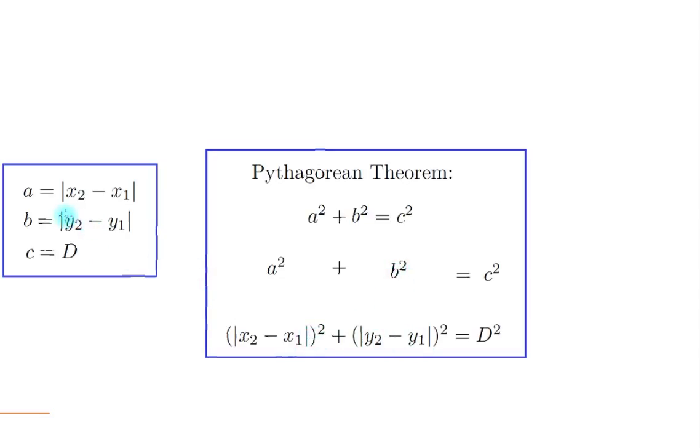b is equal to the absolute value of y₂ - y₁, which is this squared, equals c², but c is equal to D, so it's going to be D². Now notice that the absolute value of x₂ - x₁ squared...